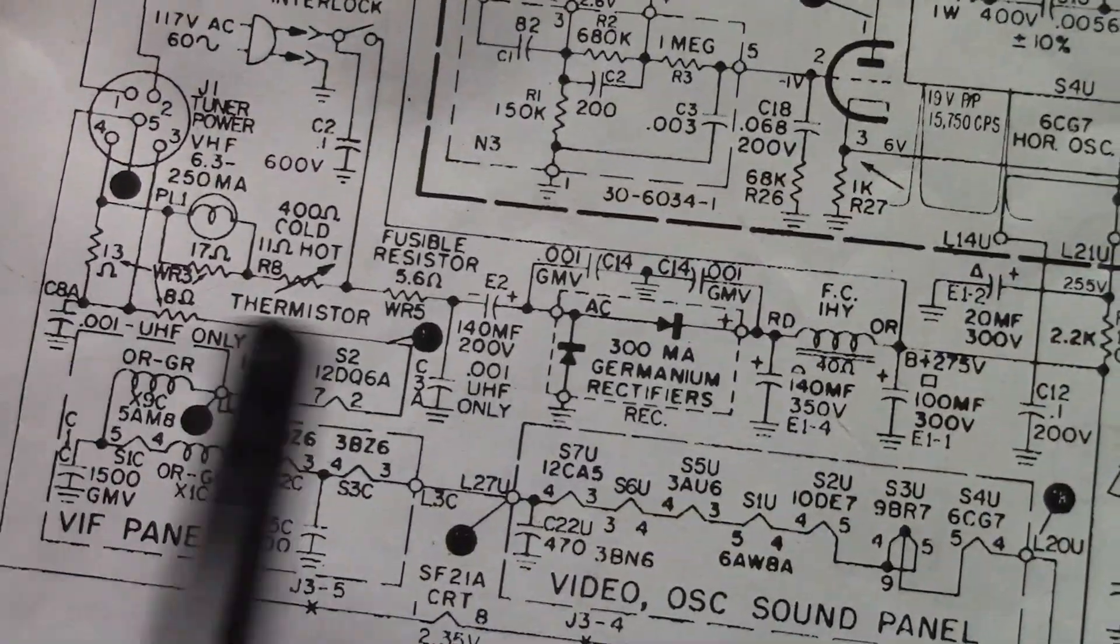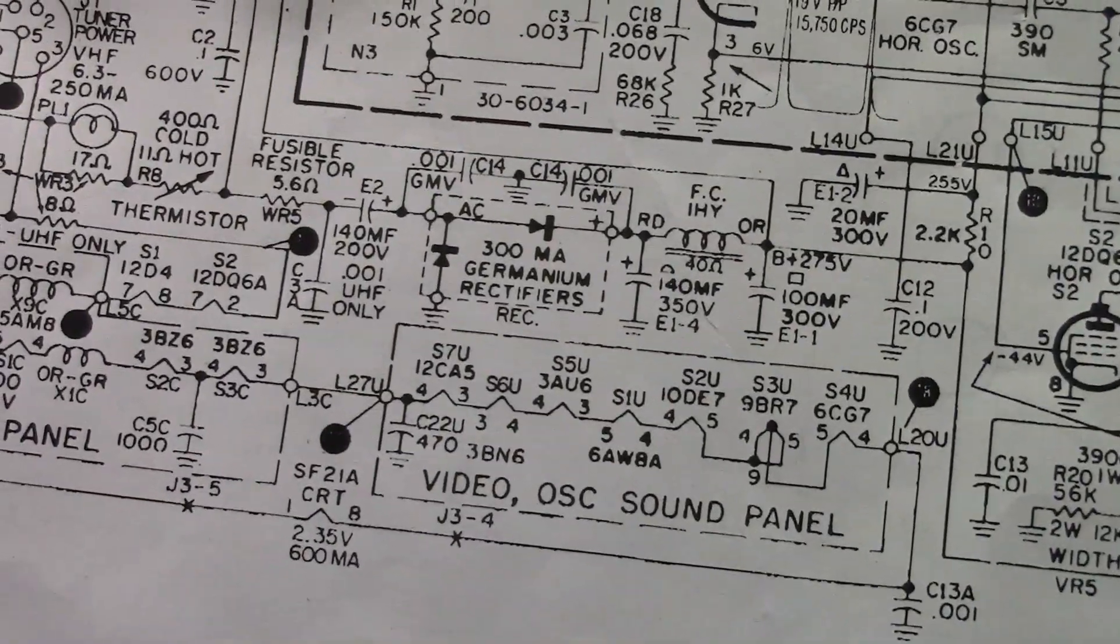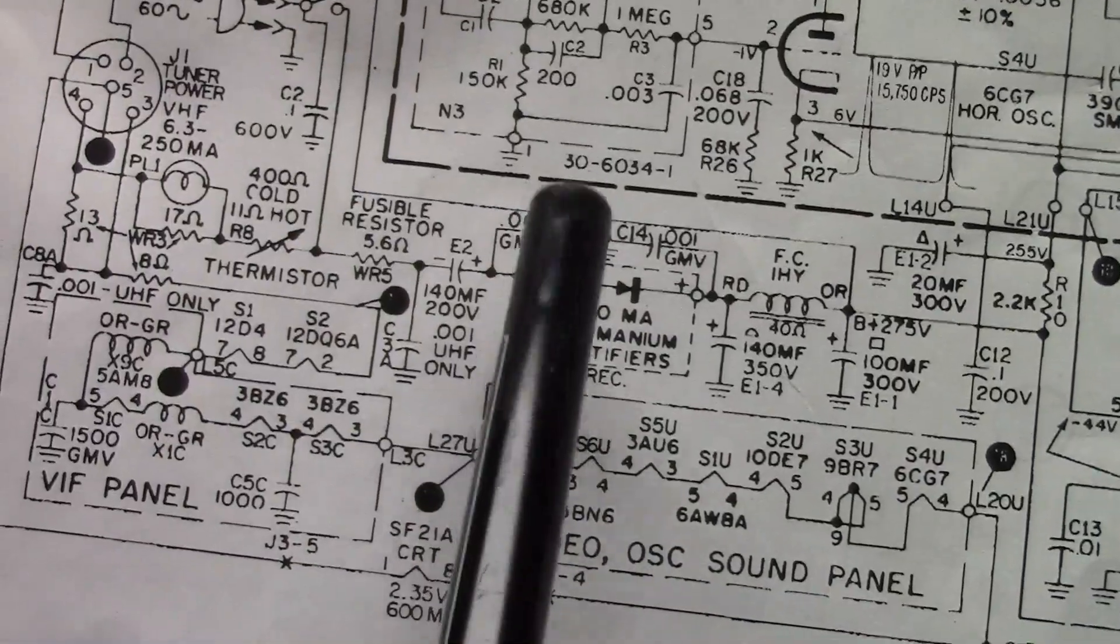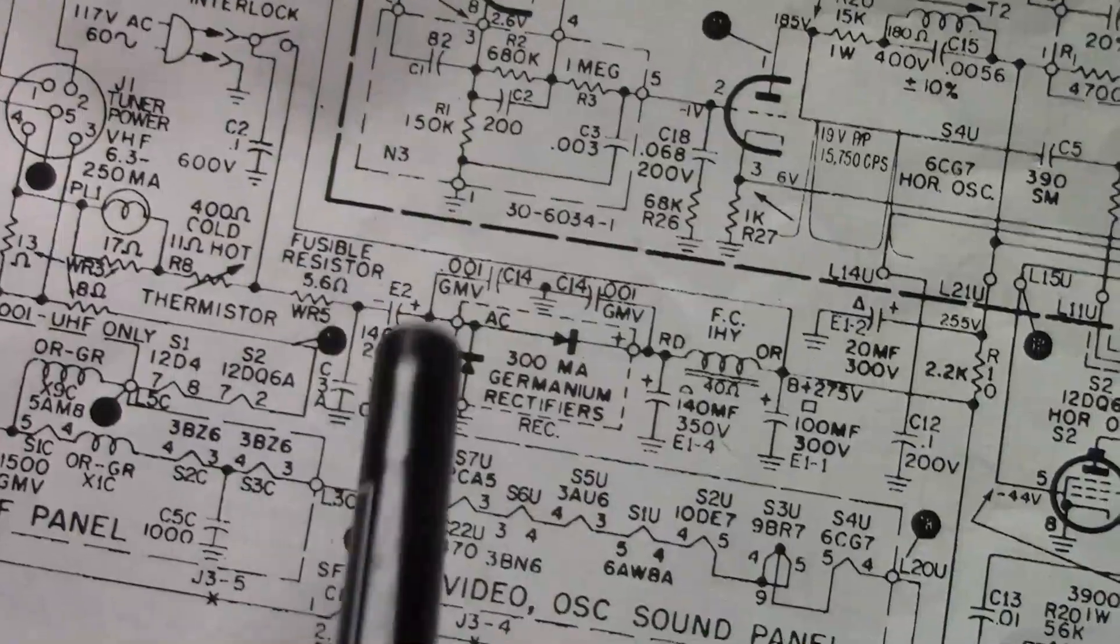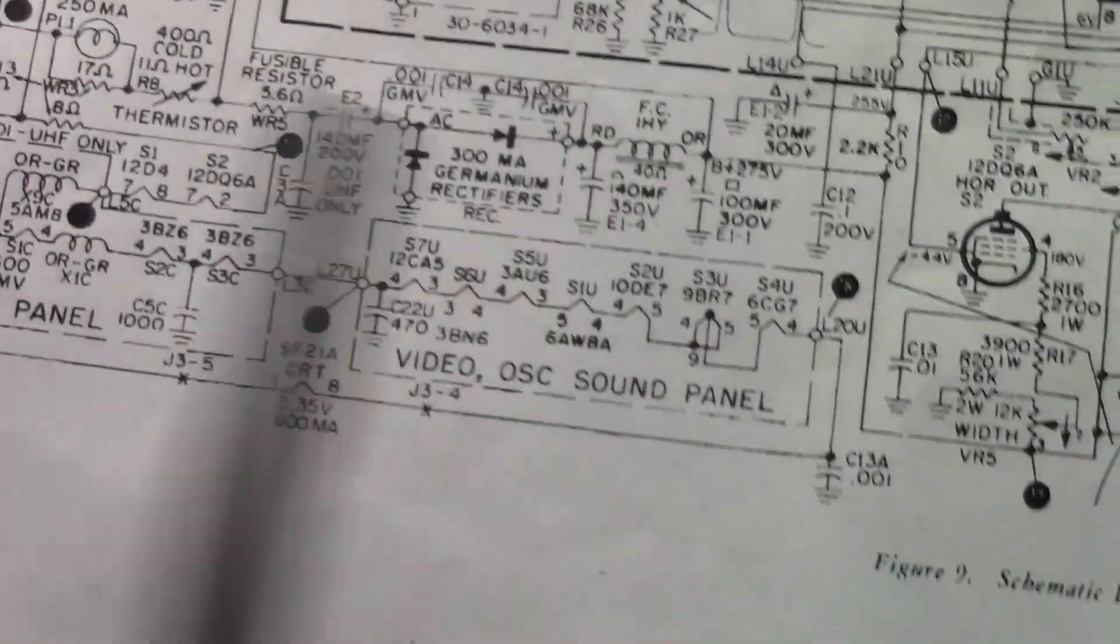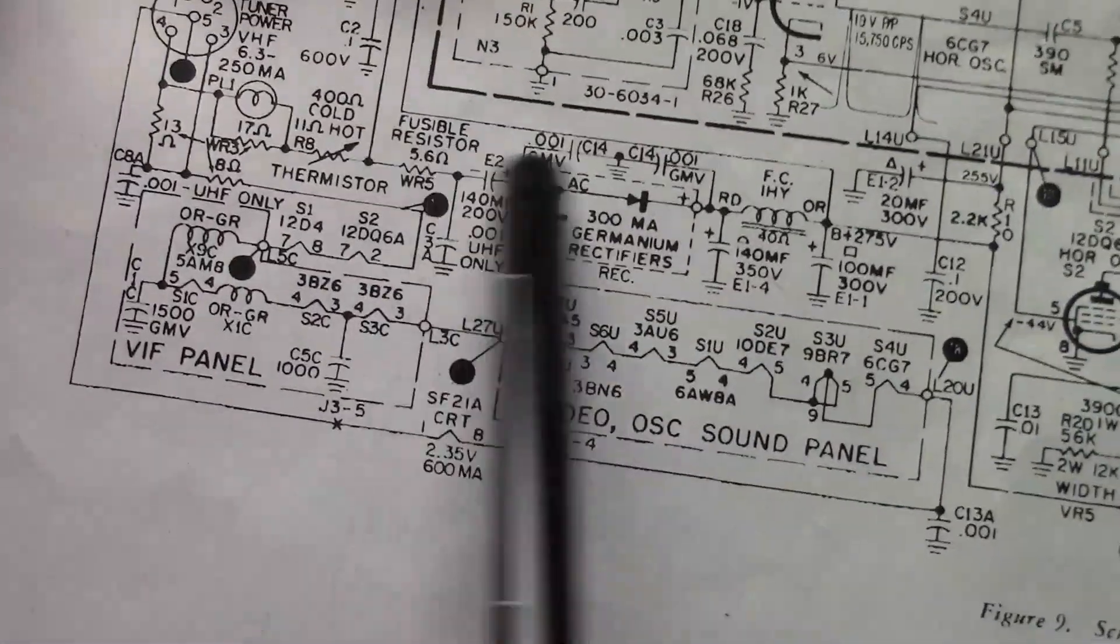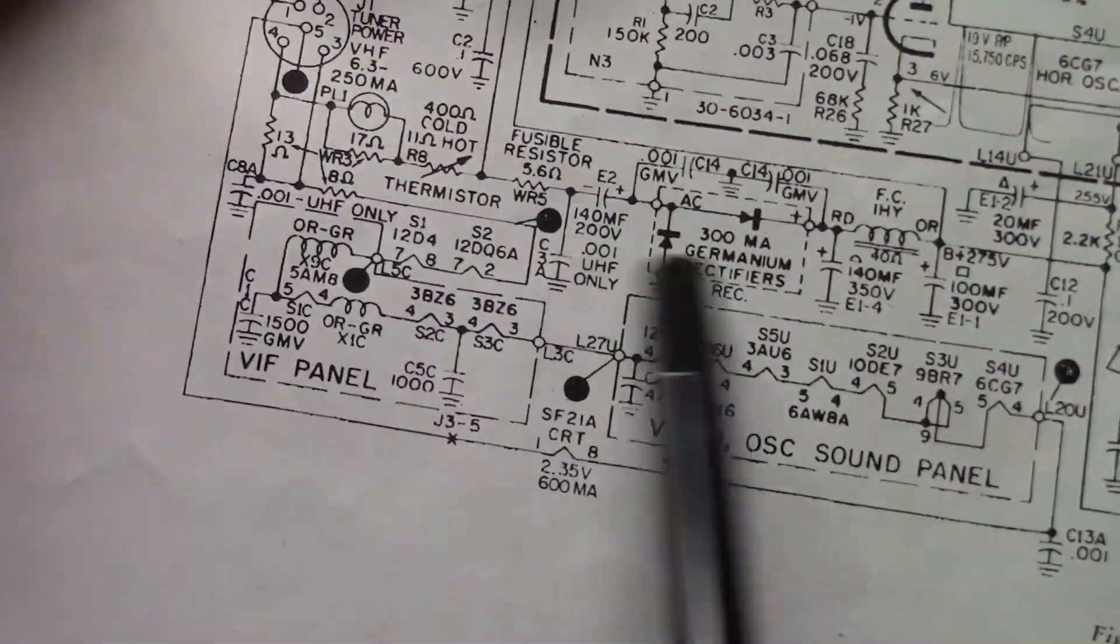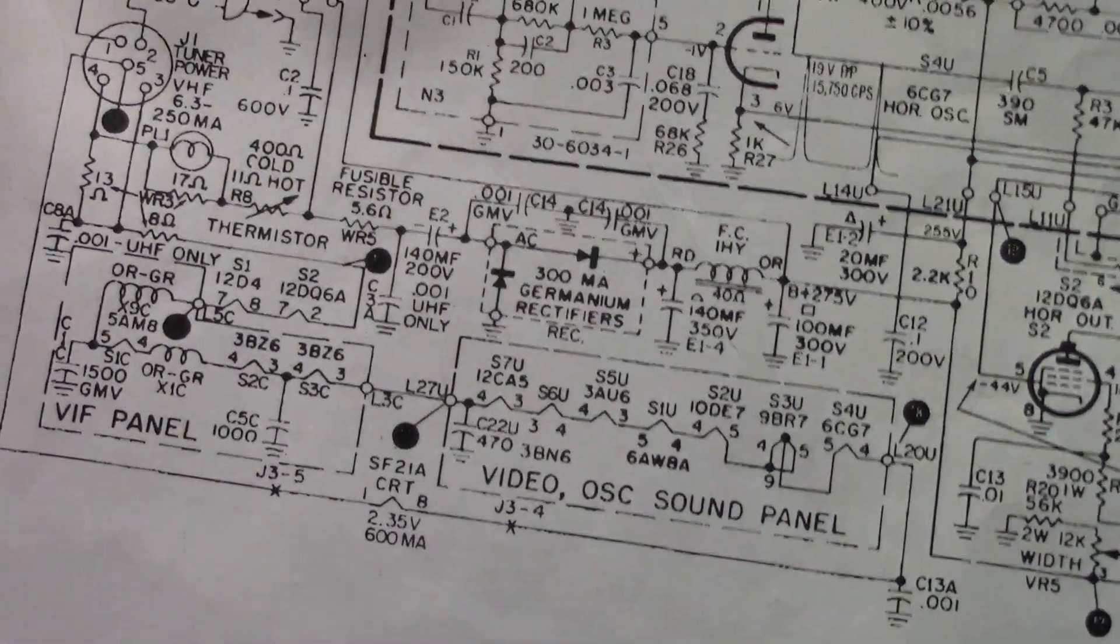Even worse than silicon in terms of their ability to handle surge currents. Notice there's also some small value disc capacitors. Those are to suppress voltage spikes when the diodes turn on and off. So some of these components are here to protect these fragile, early rectifier diodes from failing.